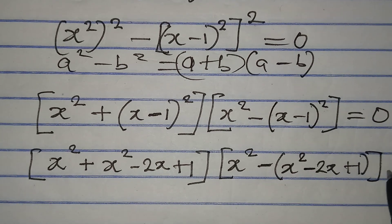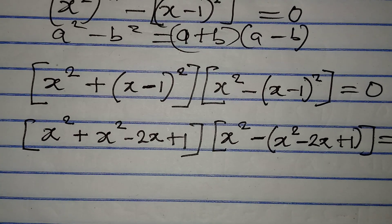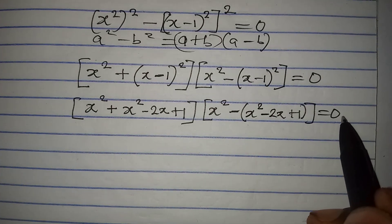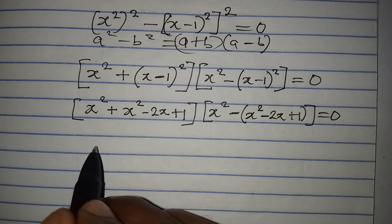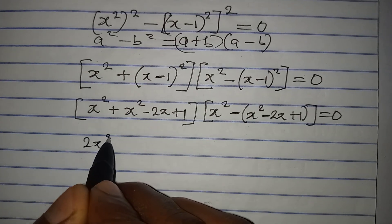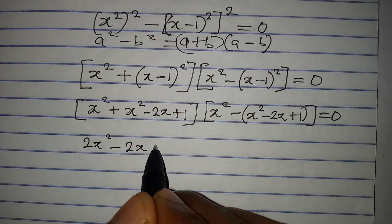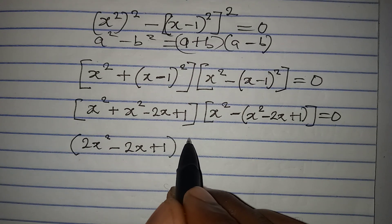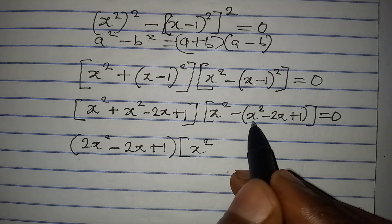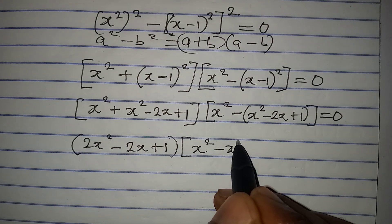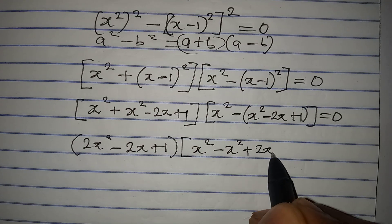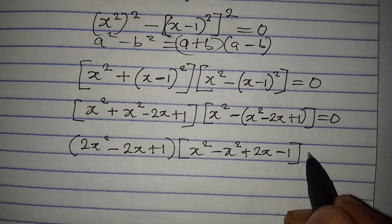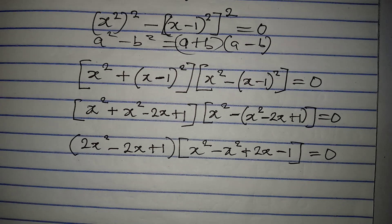The whole expression is still equal to 0. Working on the first bracket: x squared plus x squared gives 2x squared, then minus 2x plus 1. For the second bracket, we have x squared minus x squared — which gives negative x squared — plus 2x, minus 1, because the negative is multiplying everything in the bracket.